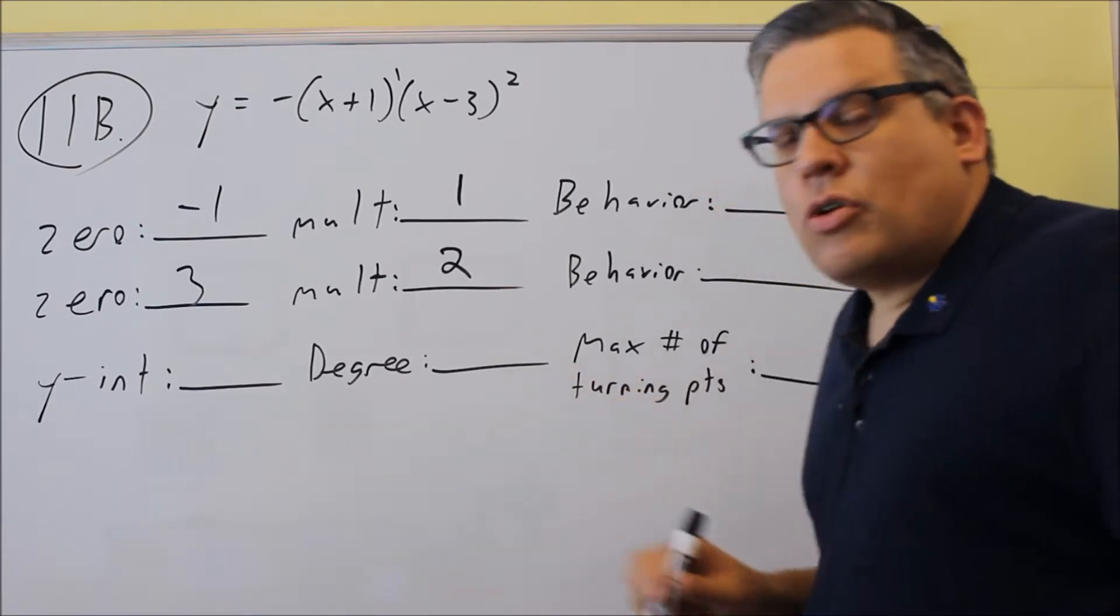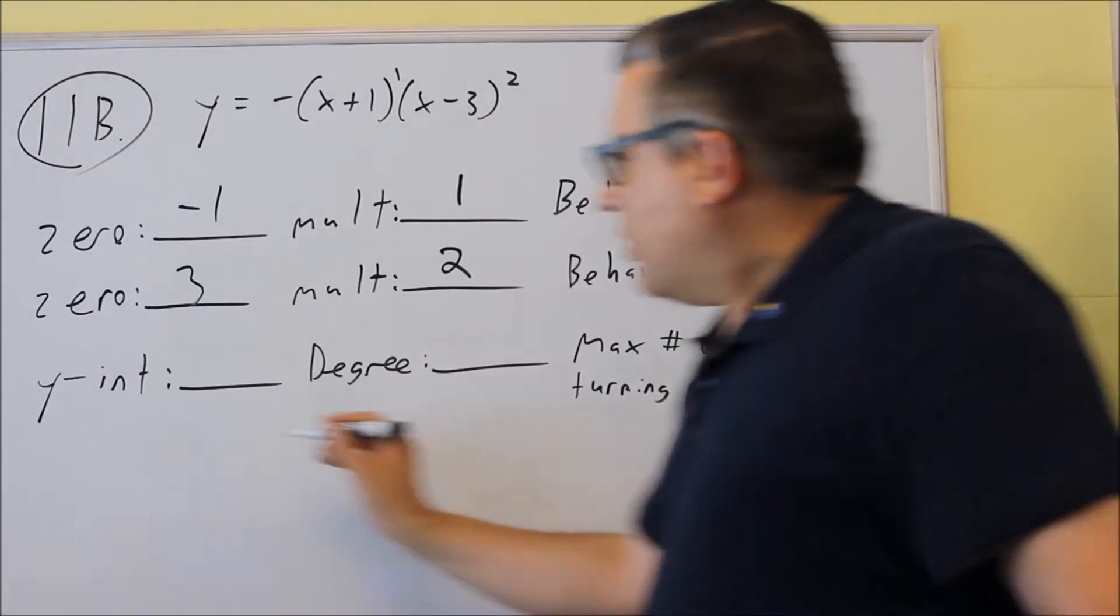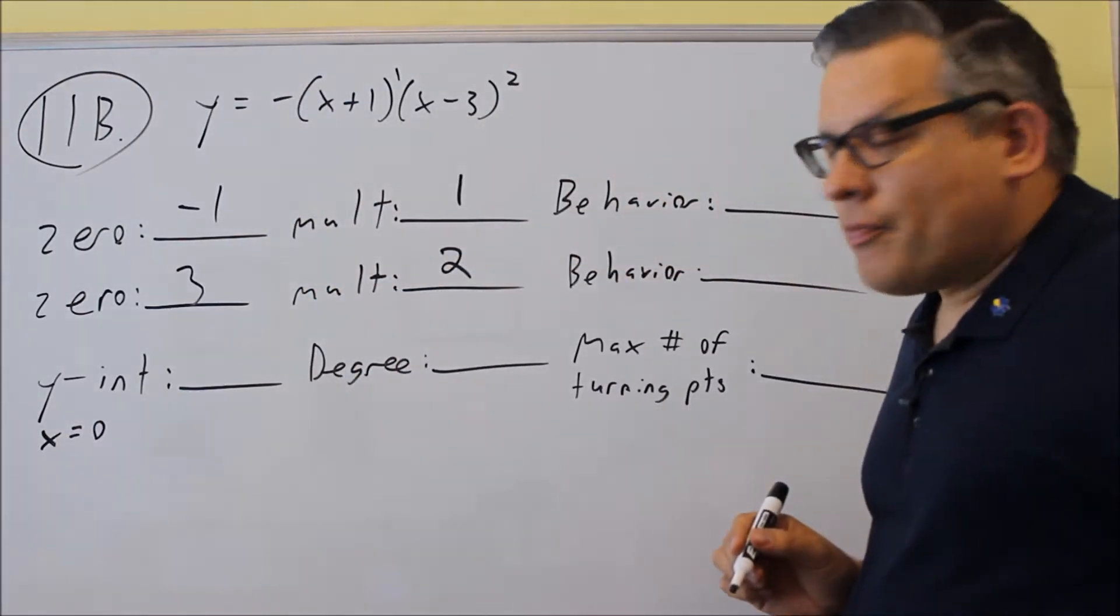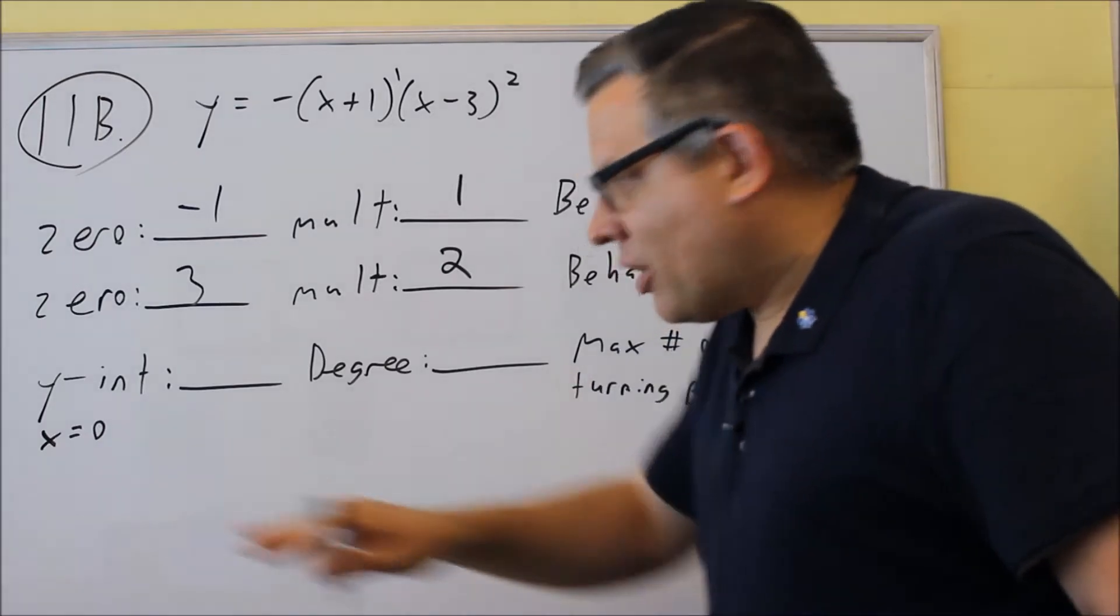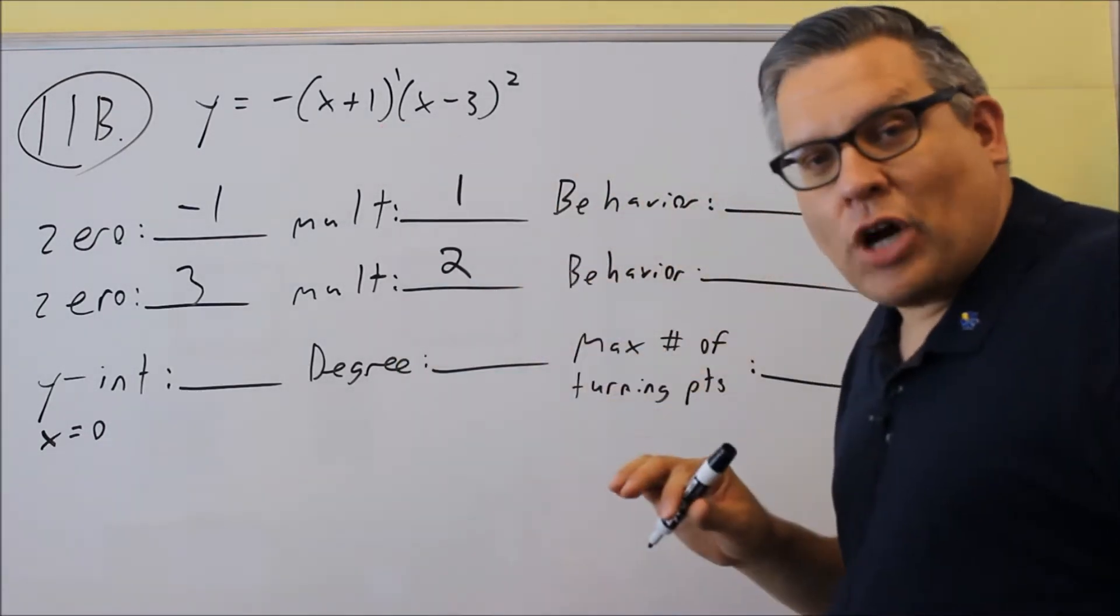Okay, so now we want to do the y-intercept. That means that your x is equal to zero. Don't just assume that because it's zero, automatically the whole thing is going to be zero. That's actually not the case with this problem.